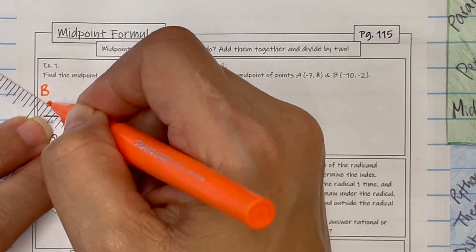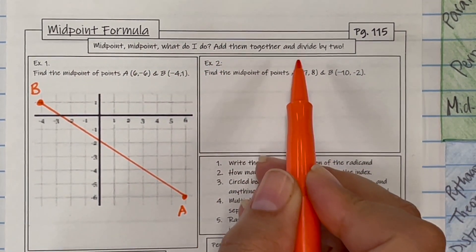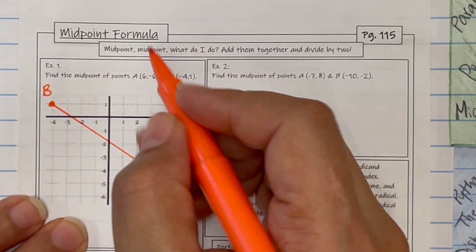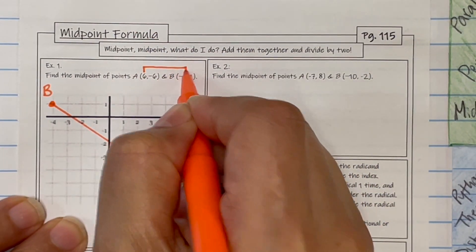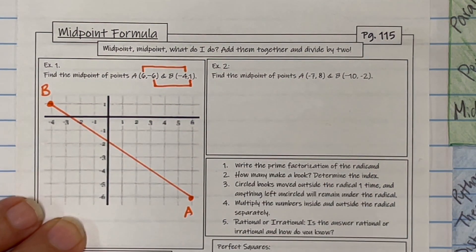Midpoint, midpoint, what do you do? Add them together and divide by 2. So what am I adding together? I'm adding the x's together and dividing by 2, and I'm adding the y's together and dividing by 2.